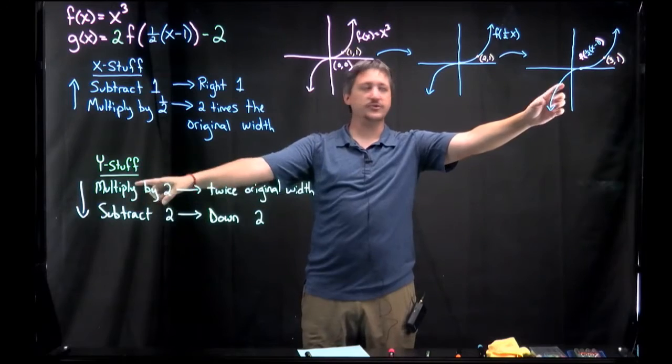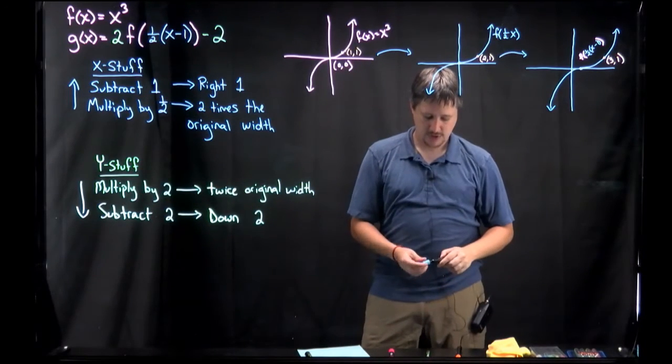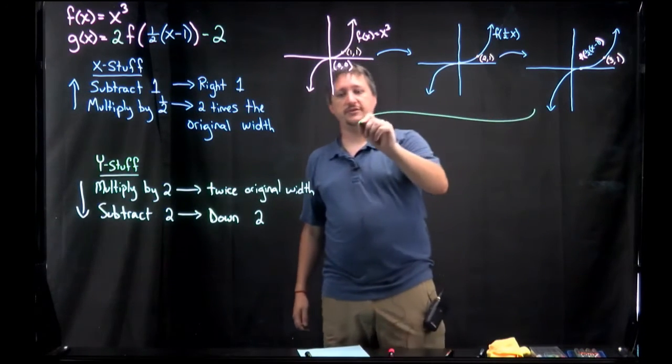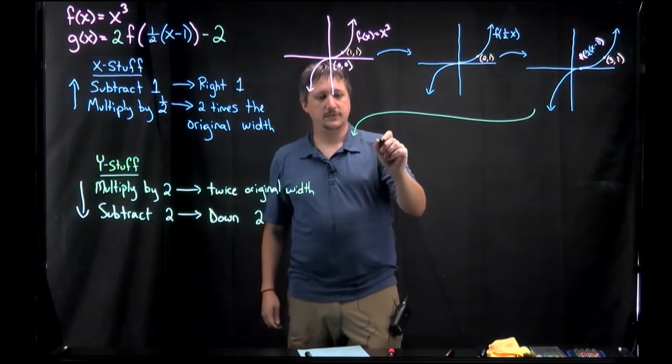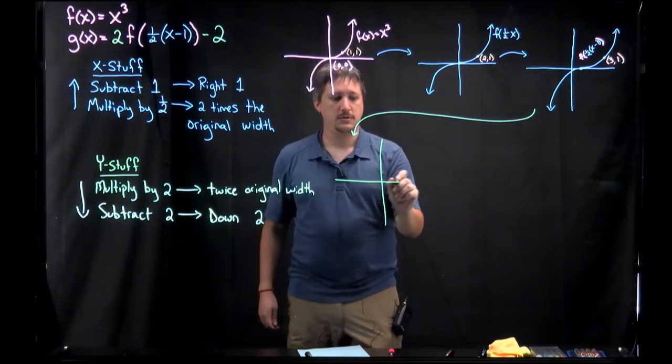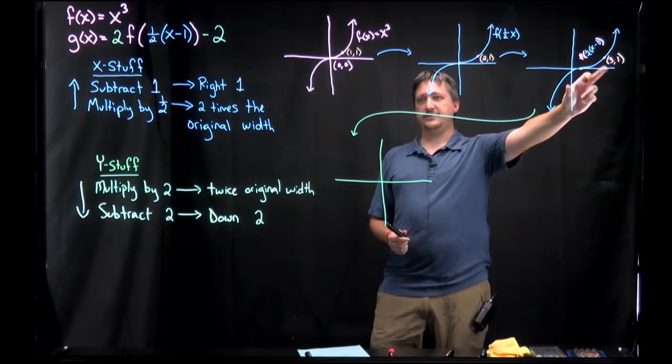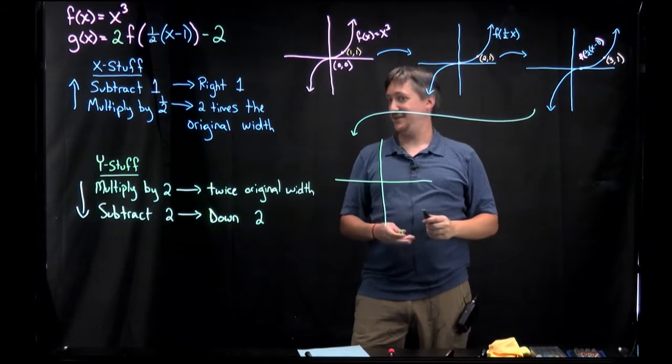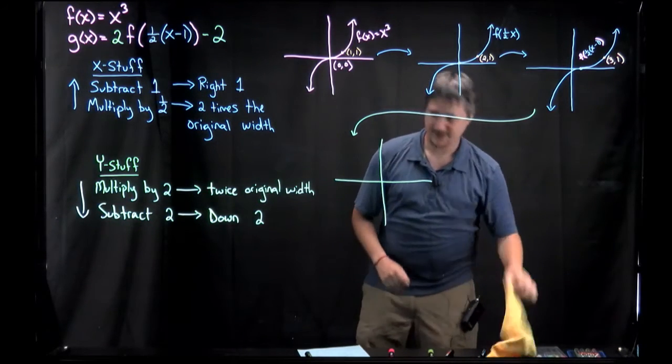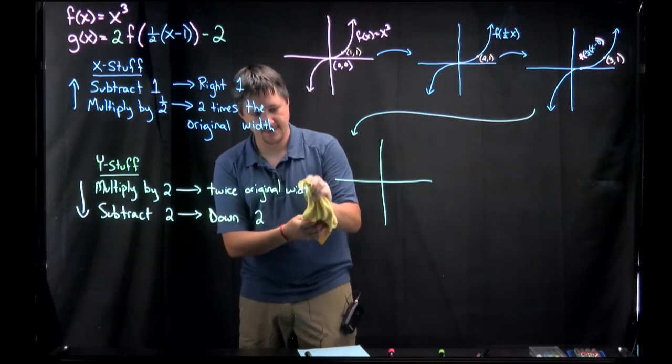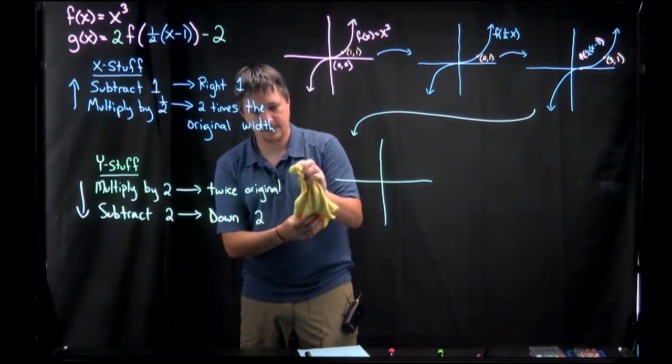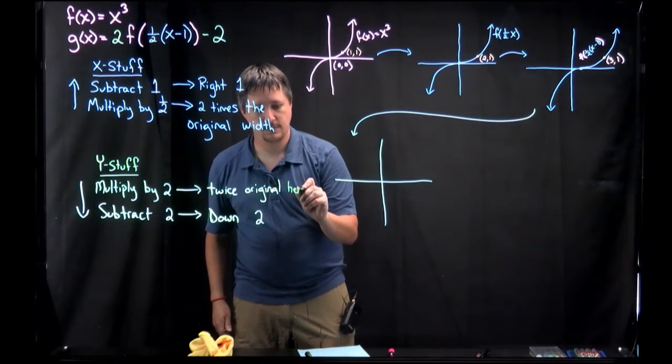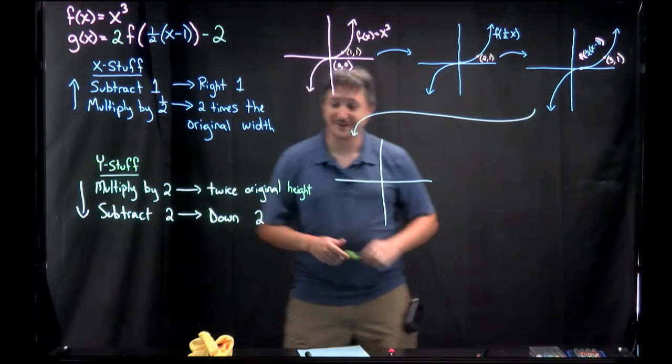So I've done the multiply by 1 half, which made the 2 times the original width. That was this. Then I've done the subtract 1. That moved it to the right 1. That's this. So now I'm going to do the y stuff. The y stuff actually goes in order. So the y stuff I was doing in green. So I'll move to that color. So here, I'm just going to write this over here, show that this is the next picture.